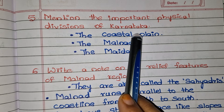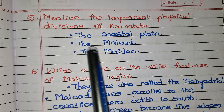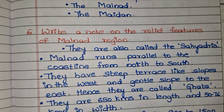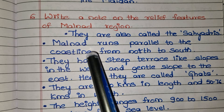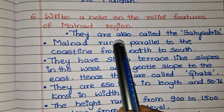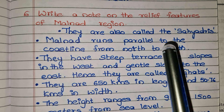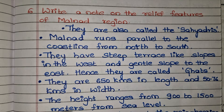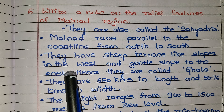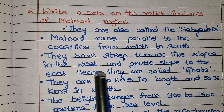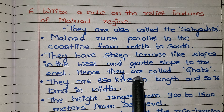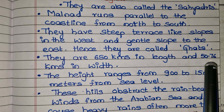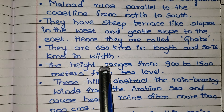Mention the important physical divisions of Karnataka: the Coastal Plain, the Malnad, and the Maidan. Write a note on the relief features of the Malnad region. They are also called the Sahyadris. Malnad runs parallel to the coastline from north to south. The hills have steep terrace-like slopes in the west and gentle slopes to the east, hence they are called Ghats. They are 650 kilometers in length and 50 to 76 kilometers in width.